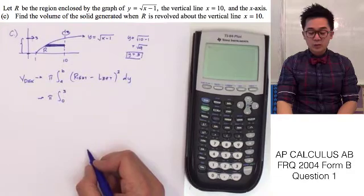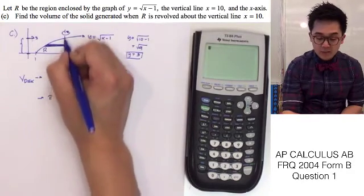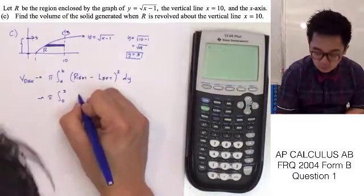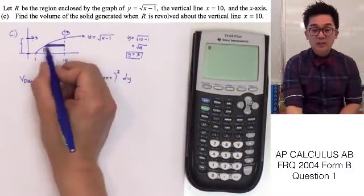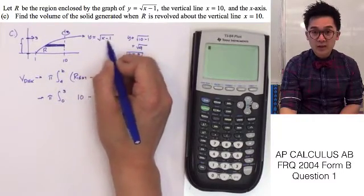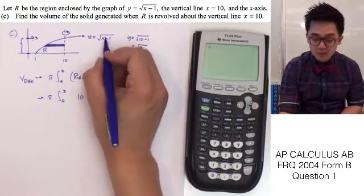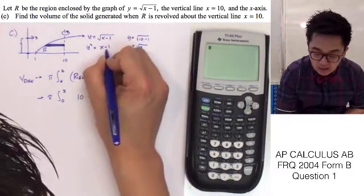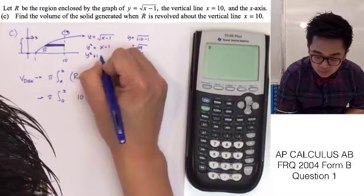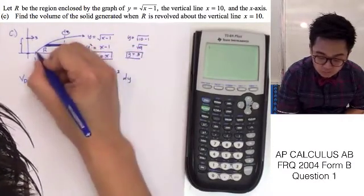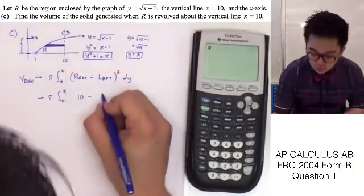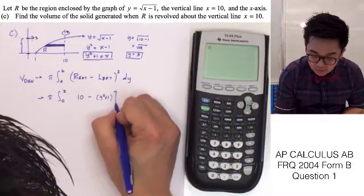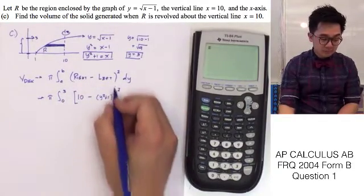We need right minus left: the rightmost function is x equal to 10, so we have 10 minus the leftmost function. Since we changed orientation, we rewrite y equals square root of x minus 1 in terms of x: squaring both sides gives y squared equals x minus 1, then adding 1 gives y squared plus 1 equals x. So the leftmost function is y squared plus 1, and our integrand is (10 minus (y squared plus 1)) squared, dy.